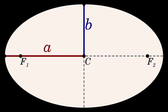Averaging over the true anomaly — the true orbital angle measured at the focus — results, oddly enough, in the semi-minor axis b = a√(1 − e²). Averaging over the mean anomaly, the fraction of the orbital period that has elapsed since pericenter expressed as an angle, finally gives the time-average a·(1 + e²/2). The time-averaged value of the reciprocal of the radius, r⁻¹, is a⁻¹.